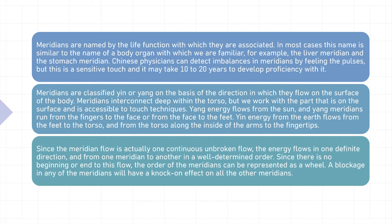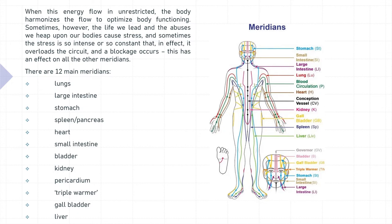A blockage in any of the meridians will have a knock-on effect on all the other meridians. When this energy flow is unrestricted, the body harmonizes the flow to optimize body functioning. Sometimes, however, the life we lead and the abuses we heap upon our bodies cause stress, and sometimes the stress is so intense or so constant that it overloads the circuit and a blockage occurs. This has an effect on all the other meridians.